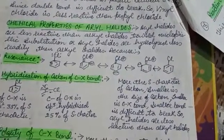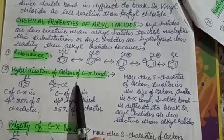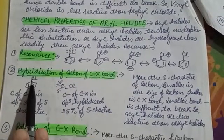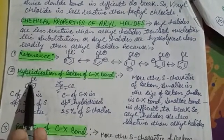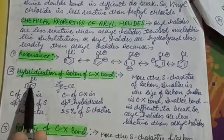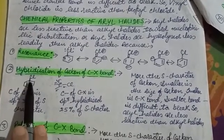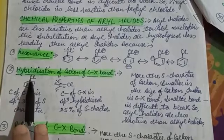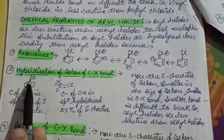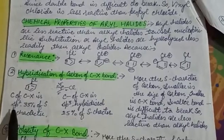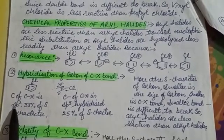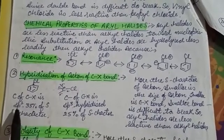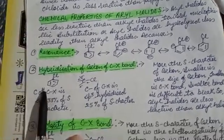Second reason is hybridization of carbon of C-X bond. If you look at aryl halide, it is benzene and chlorine. If I talk about this carbon, this carbon has one sigma bond, two sigma bonds, three sigma bonds, plus a double bond. Basically this carbon, C-X carbon and halogen - how many bonds are there? One, two, three sigma bonds. Three sigma bonds means SP2 hybridization.